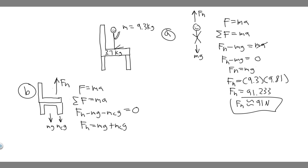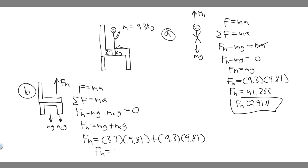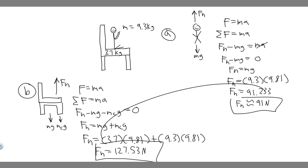So the mass of the chair is 3.7 times g, which is 9.81, plus the mass of the child, which is 9.3 times 9.81. When you go ahead and calculate this, the normal force F sub N is equal to 127.53 newtons. We measure force in newtons, so 127.53 newtons is the normal force exerted by the floor on the chair — that's your answer for part B. You can round however you want, but essentially these are both your answers.